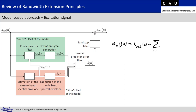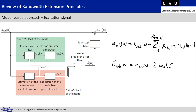After obtaining the narrowband excitation signal, we can extend it — for example, using modulation: the estimated broadband excitation signal Ê_BB equals E_NB(n) times 2·cos(ω₀·n). Now with the estimated broadband excitation signal, we need to estimate the wideband spectral envelope as well. Different approaches exist for this estimation, which I will explain in the next slides.